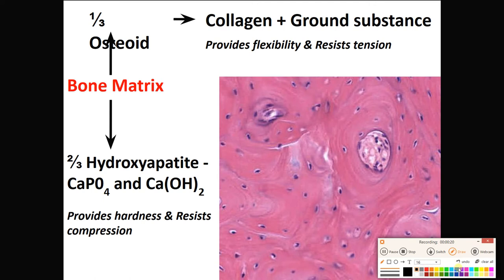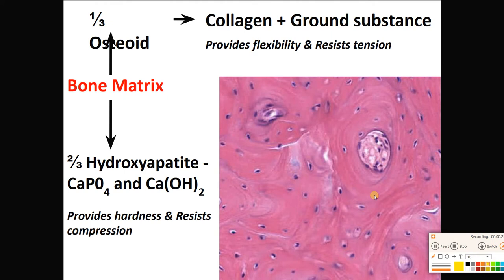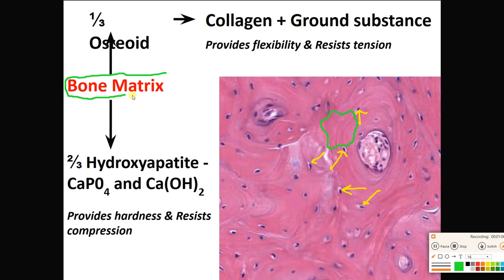Connective tissue does not have a ton of cells. If I take a look at this bone slide right here, I see these osteocytes sitting in their little lacunae. They are rather far apart — there is all of this pinkish space in between them. That pinkness is bone matrix. Remember, connective tissues are usually dominated by the matrix.